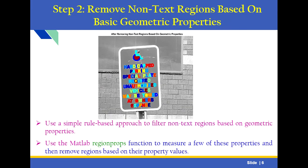The second step is to remove non-text regions based on basic geometric properties. We can use a simple rule-based approach to filter non-text regions based on geometric properties. We use the MATLAB RegionProps function, which measures a few of these properties and then removes regions based on their property values.